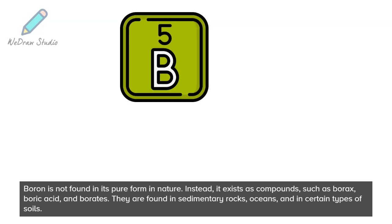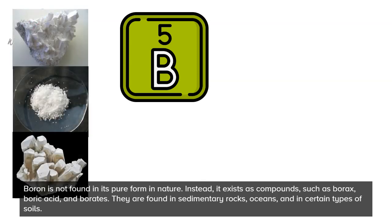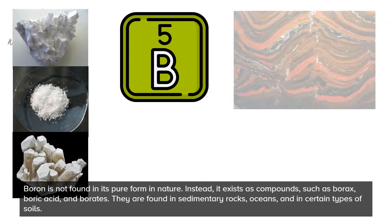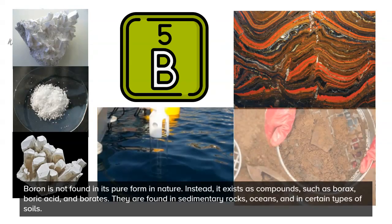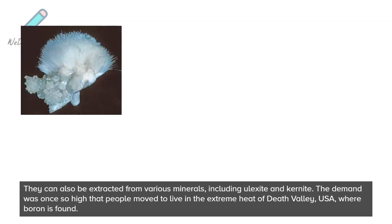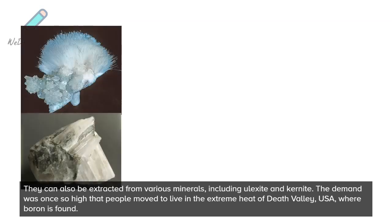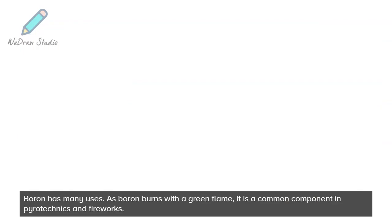Boron is not found in its pure form in nature. Instead, it exists as compounds such as borax, boric acid, and borates, found in sedimentary rocks, oceans, and in certain types of soils. They can also be extracted from various minerals including ulexite and kernite. Demand was once so high that people moved to live in the extreme heat of Death Valley, USA, where boron is found.